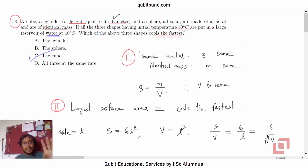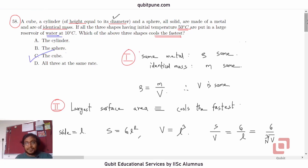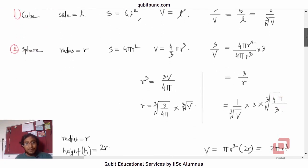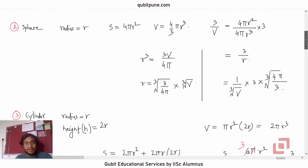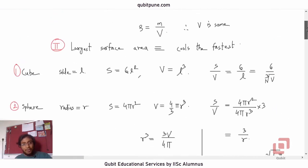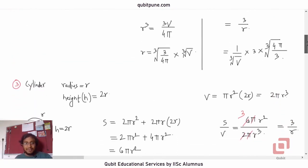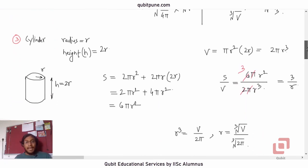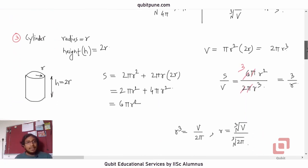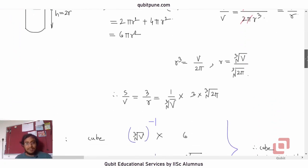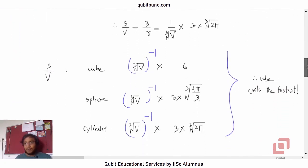This could be time consuming, but we could have skipped the sphere part since it had to be either a cylinder or the cube. Anyways, we have solved it completely, and the final answer is: the cube will cool the fastest.